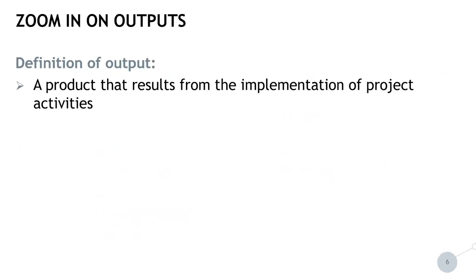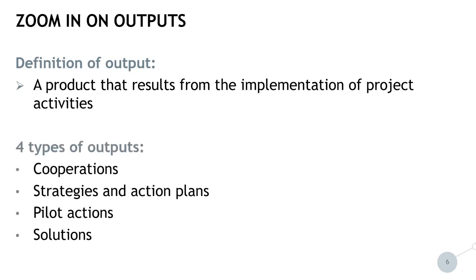Let us zoom in now on the outputs. First, with the definition of an output: an output is a product that results from the implementation of project activities. In our program, we are differentiating between four different types of outputs: corporations, strategies and action plans, pilot actions, and solutions.